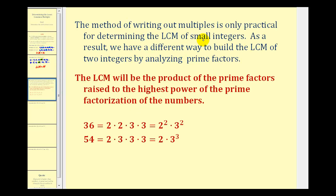The method of writing out multiples is only practical for determining the LCM of small integers. As a result, we do have a different way to build the LCM of two integers by analyzing the prime factors. The LCM, or least common multiple, will be the product of the prime factors raised to the highest power of the prime factorization of the numbers.